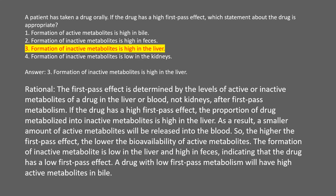Answer: 3. Formation of inactive metabolites is high in the liver. Rational: the first-pass effect is determined by the levels of active or inactive metabolites of a drug in the liver or blood, not the kidneys. If the drug has a high first-pass effect, the proportion of drug metabolized into inactive metabolites is high in the liver. As a result, a smaller amount of active metabolites will be released into the blood. So the higher the first-pass effect, the lower the bioavailability of active metabolites.